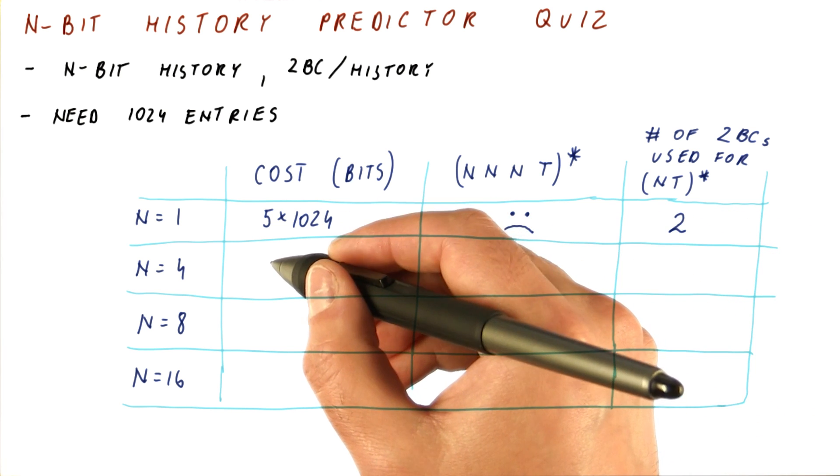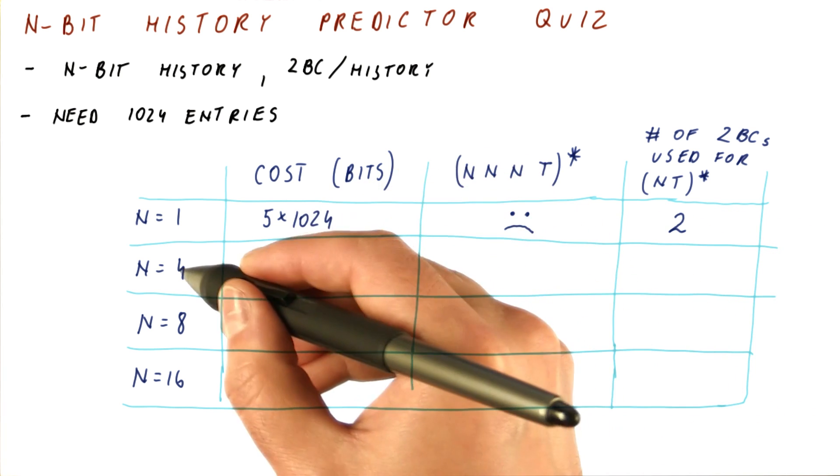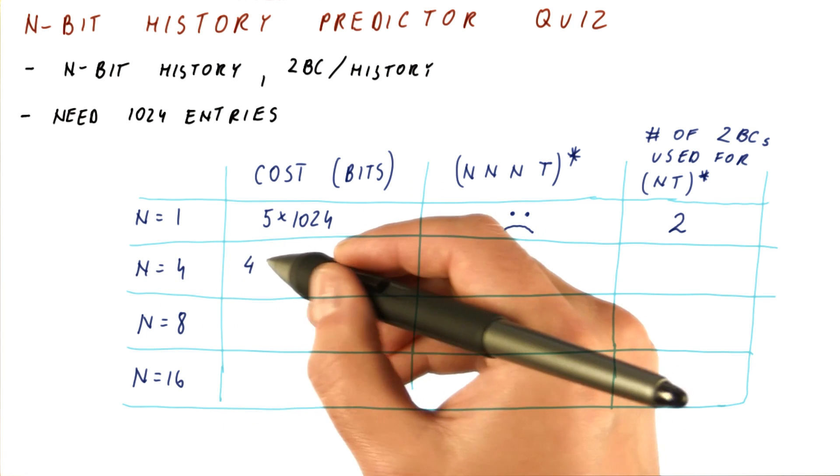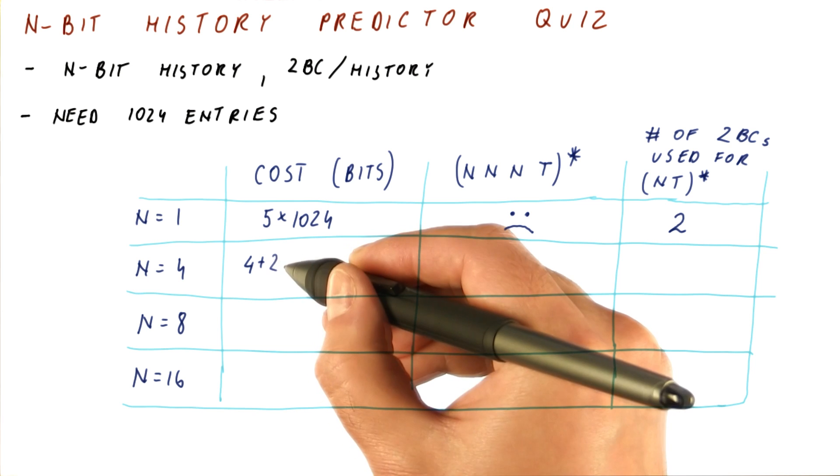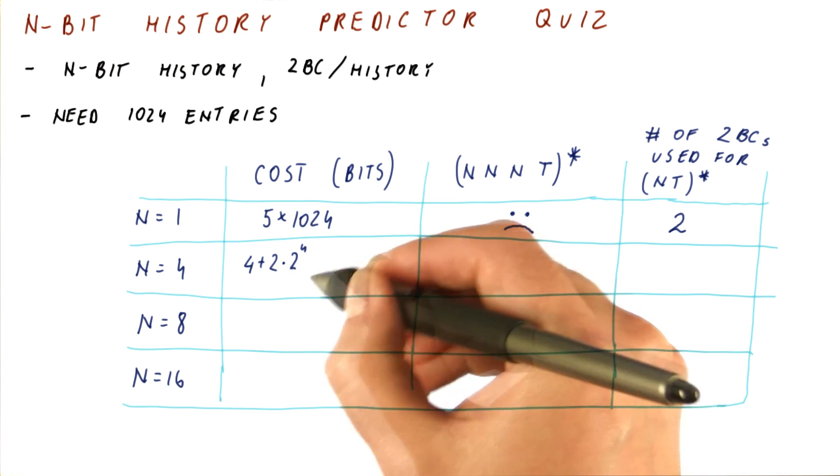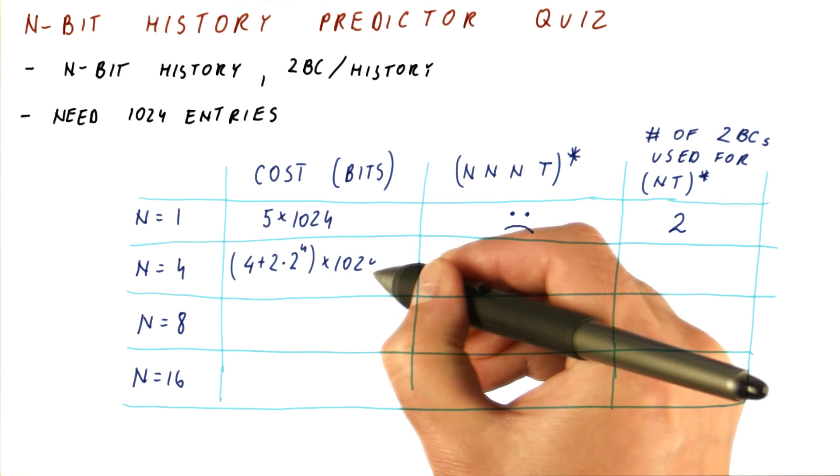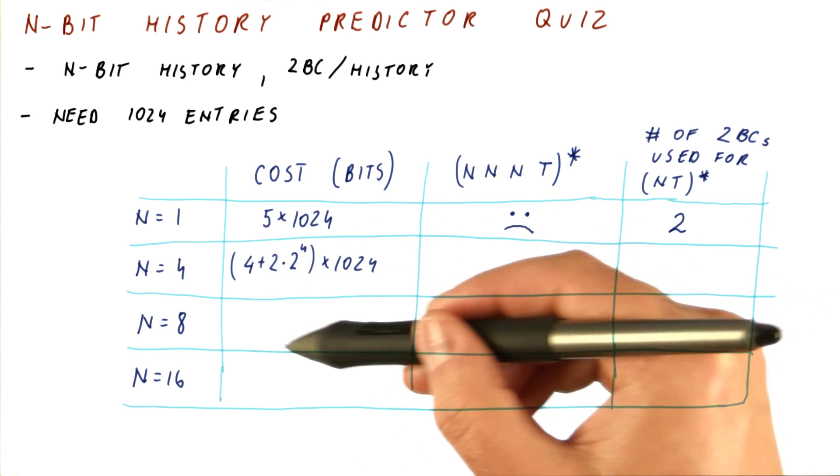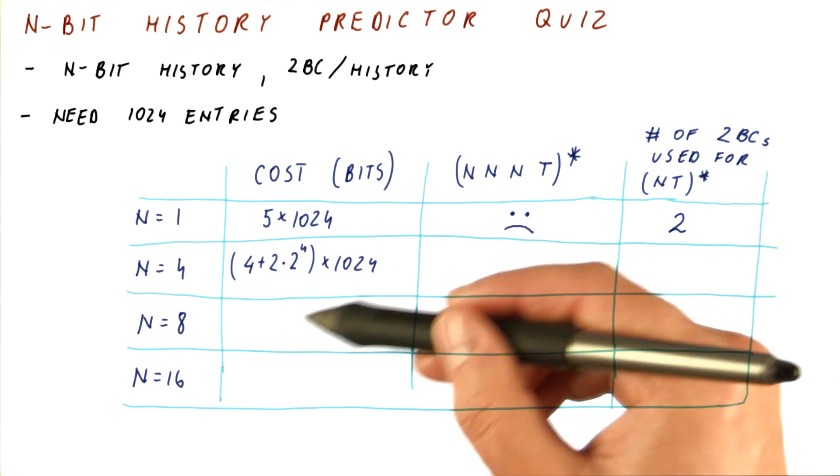To further help you, I'm going to tell you that the cost of an n equals four predictor should be: the history is four plus two-bit predictors, I need two to the fourth of them, times 1,024. You can compute what this is. You should put a real number here, so you should multiply things out for these two.